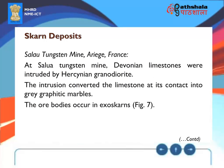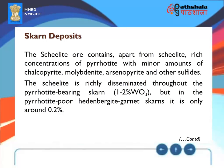At the Salove tungsten mine, France, Devonian limestones were intruded by Hercynian granodiorite. The intrusion converted the limestone at its contact into grey graphitic marbles. The ore bodies occur in exoskarns (Figure 7). The scheelite ore contains, apart from scheelite, rich concentrations of pyrrhotite with minor amounts of chalcopyrite, molybdenite, arsenopyrite and other sulphides. The scheelite is richly disseminated throughout the pyrrhotite-bearing skarn at 1–2% tungsten oxide, but in the pyrrhotite-poor hedenbergite-garnet skarn it is only around 0.2%.